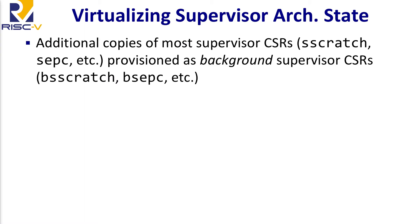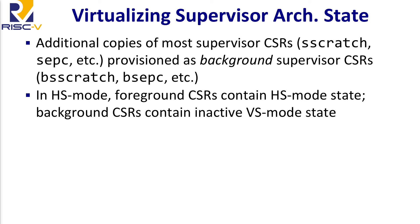To virtualize the privileged architecture state, we provide additional copies of the majority of the supervisor CSRs. Most of these are used for managing exceptions — things like the scratch register, the exception program counter, and so forth. We call these background supervisor CSRs, named things like bsscratch and bsepc. When you're in hypervisor extended supervisor mode — running inside the hypervisor — the foreground CSRs (the ones already familiar, named sscratch, sepc) contain the hypervisor's copy of those registers.